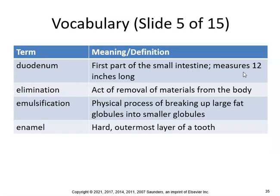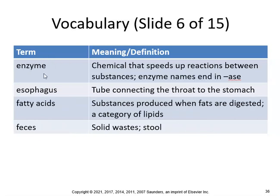The duodenum is the first part of the small intestine and measures 12 inches long. Elimination is the act of removal of materials from the body. Emulsification is the physical process of breaking up large fat globules into smaller globules. Enamel is the hard outermost layer of the tooth — not living material, so once it's gone there's no way to get it back. Enzymes are chemicals that speed up reactions between substances; enzymes end in -ase: amylase, lipase, protease.